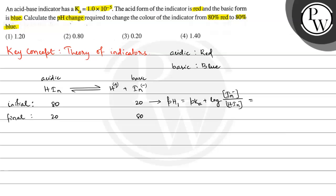So pH1 will be equal to pKa plus log, IN- concentration is 20 here and HIN concentration is 80 here, so this is 20 divided by 80.